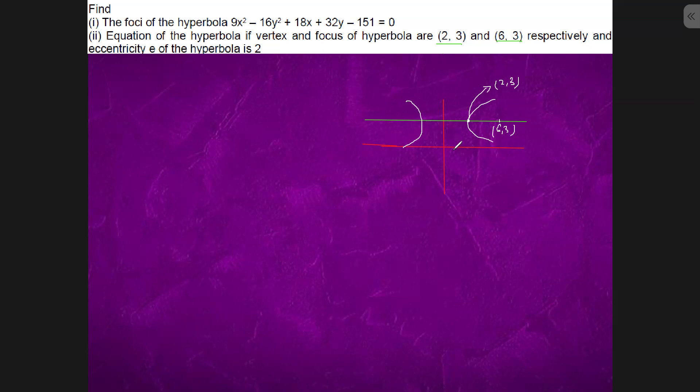So we know that this distance is a. And this distance is a. So a minus a is what? 4. Is what? 2a. 6 minus 2 equals to 4. So a is what? 2. A is 2.